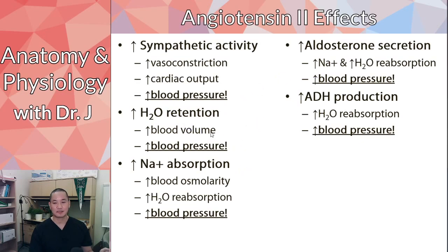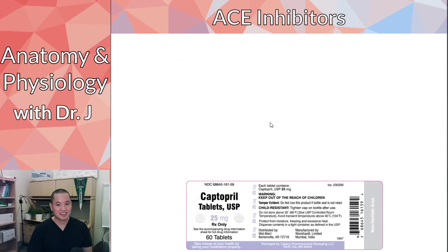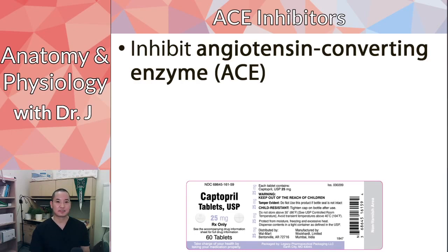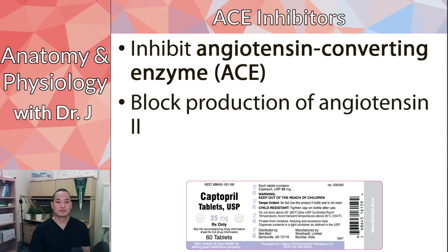ACE inhibitors — like captopril — are a good example here. If a drug name ends in '-pril,' it's probably an ACE inhibitor. What they do is inhibit angiotensin converting enzyme. Since angiotensin 2 is the active one that increases blood pressure through that multi-pronged attack, if you inhibit ACE, you can't convert angiotensin 1 to angiotensin 2, so you block all those effects of angiotensin 2.